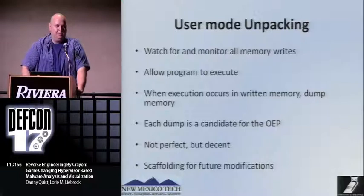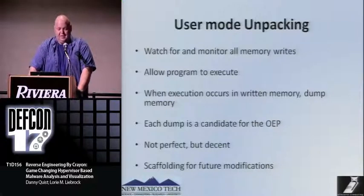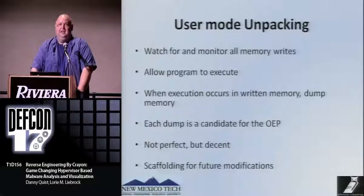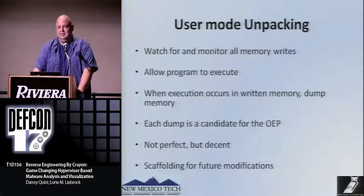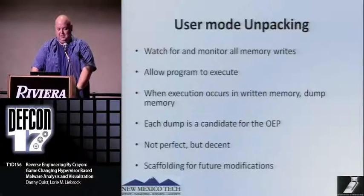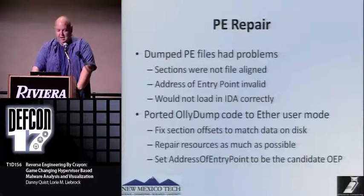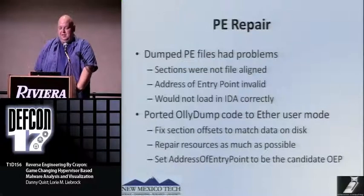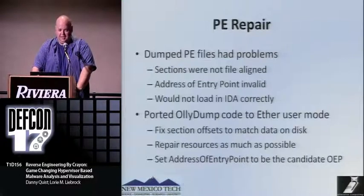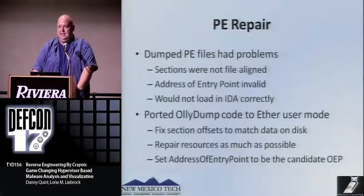The user mode unpacking works by watching and monitoring all memory writes and executions. We keep all memory writes inside a hash table. Whenever we see an execution inside one of those memory write regions, we assume it's a candidate original entry point and take a dump of the image. This isn't perfect but it's a decent solution. For PE repairs, there were a couple of issues: sections weren't aligned, the address of the entry point was invalid, and it wouldn't load inside of IDA correctly. I took code from OllyDump to fix the section offsets, repair resources, and set the address of the original entry point correctly to allow loading inside of IDA.